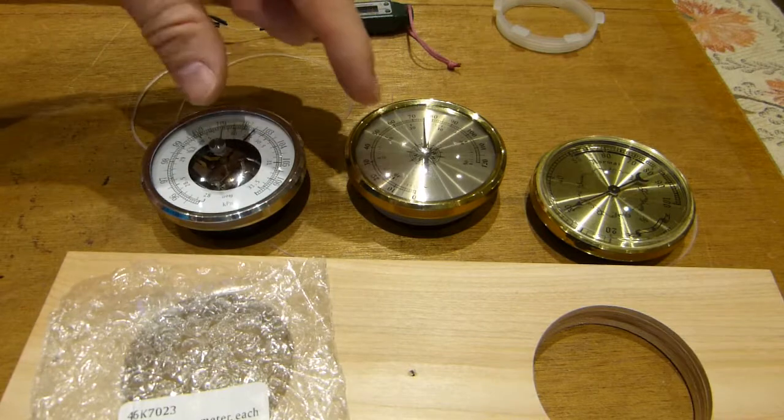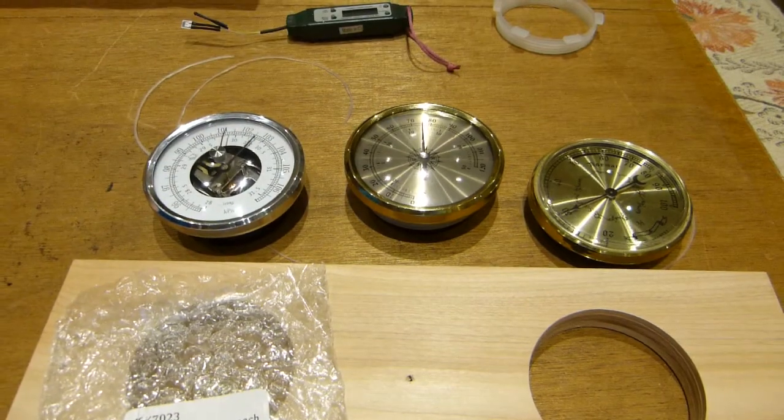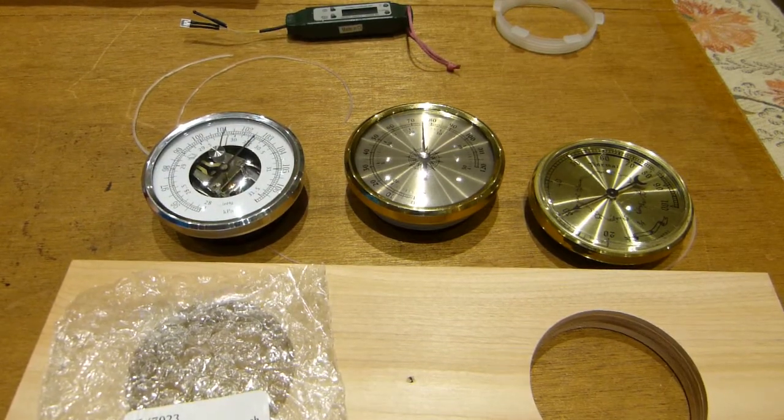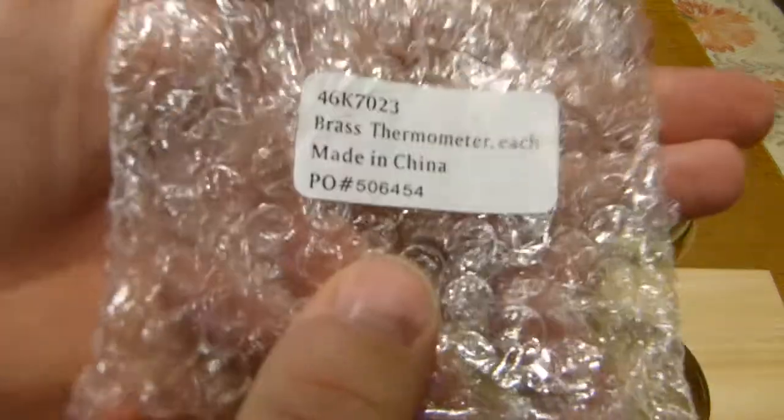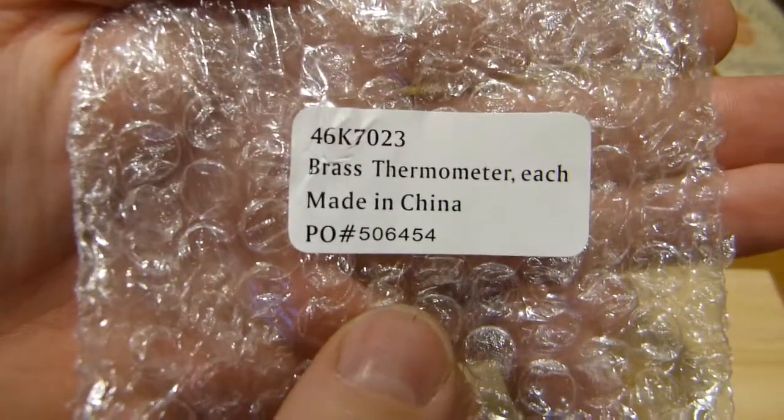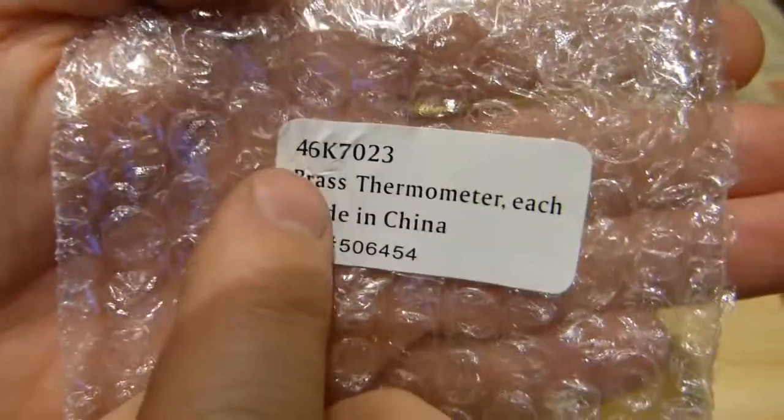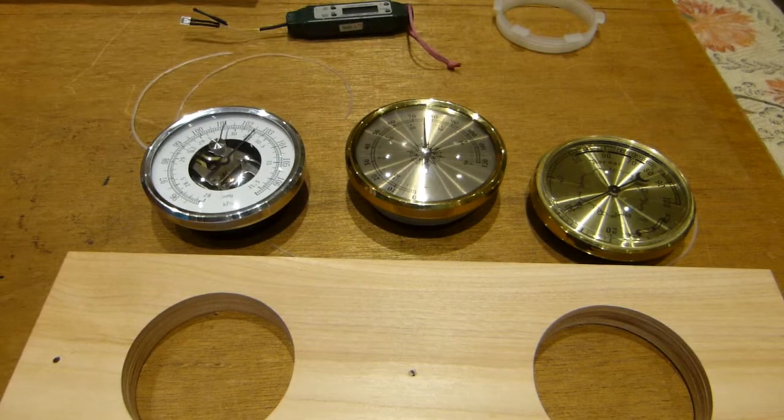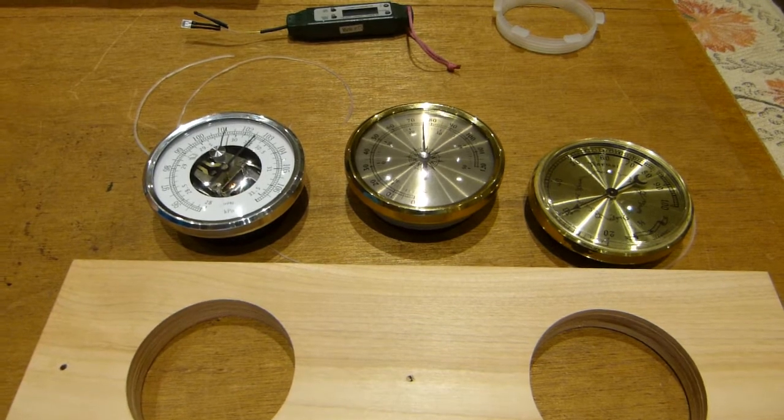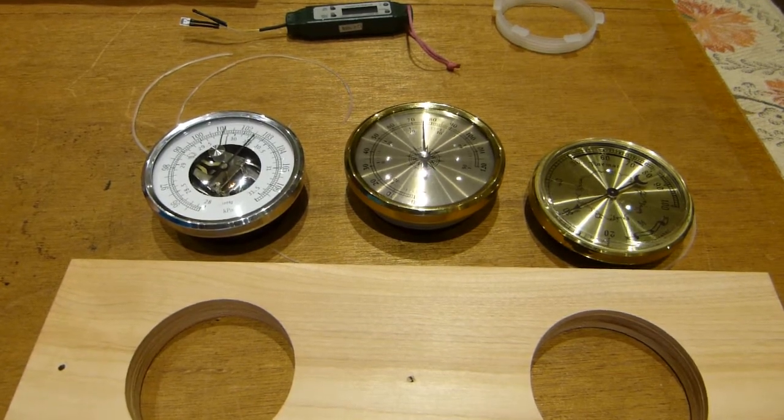With the two color finishes and three instruments, there are six part numbers in total. I just have the part number of one of them, that one up top, the 46K7023. They are fairly inexpensive too - a set of three costs around $45 or so.